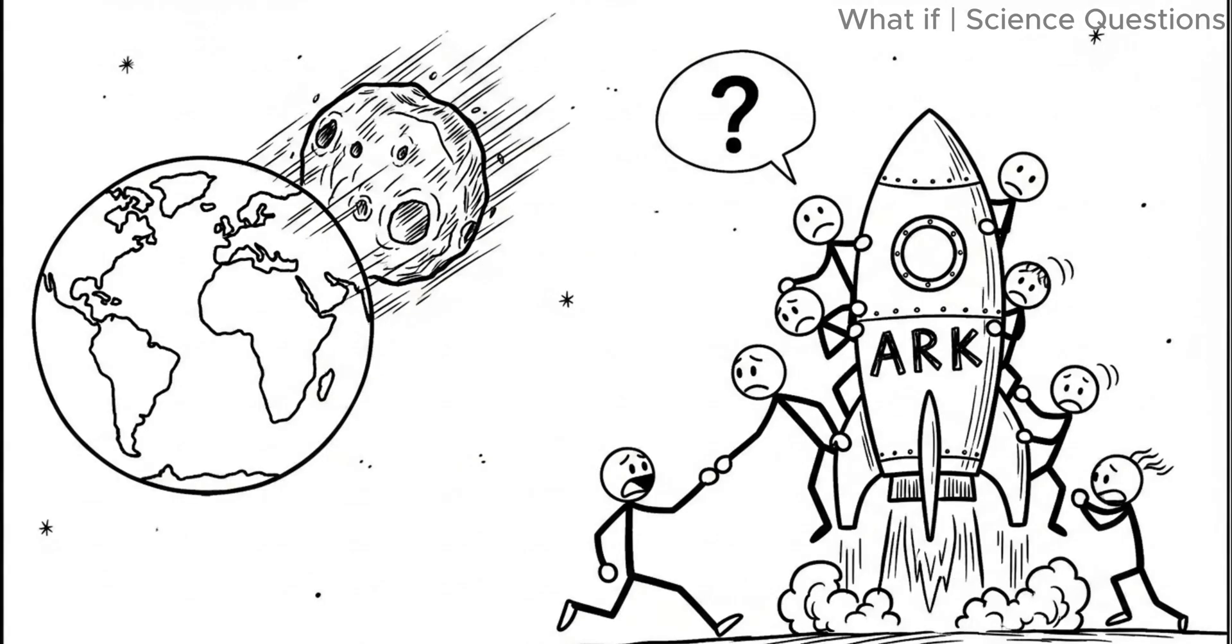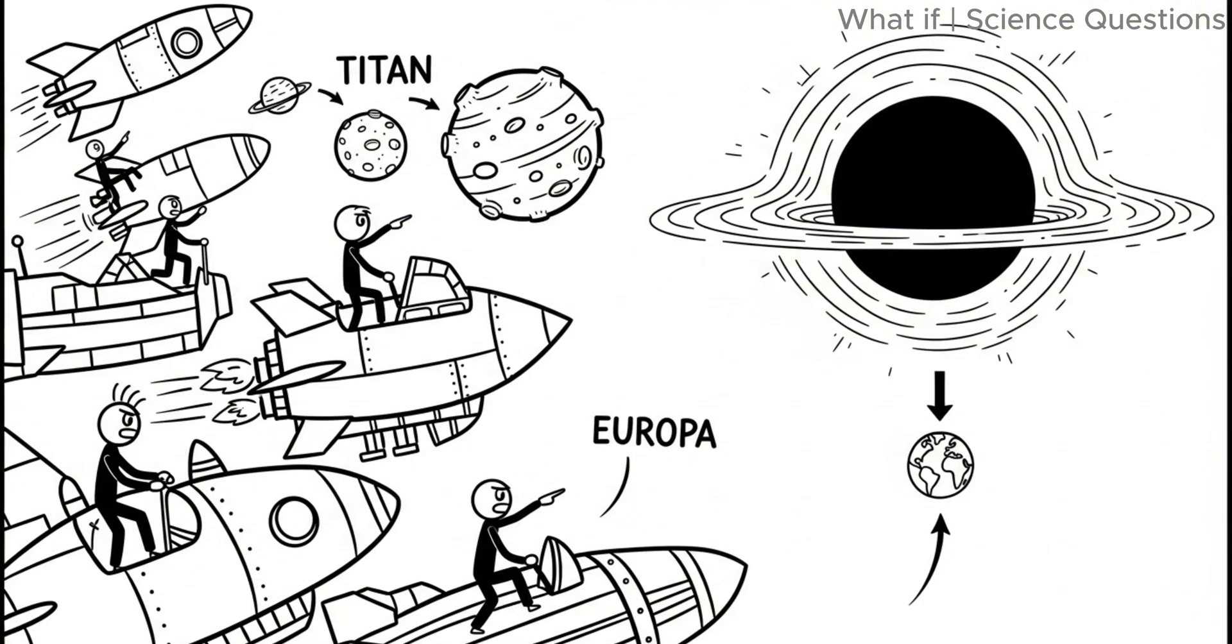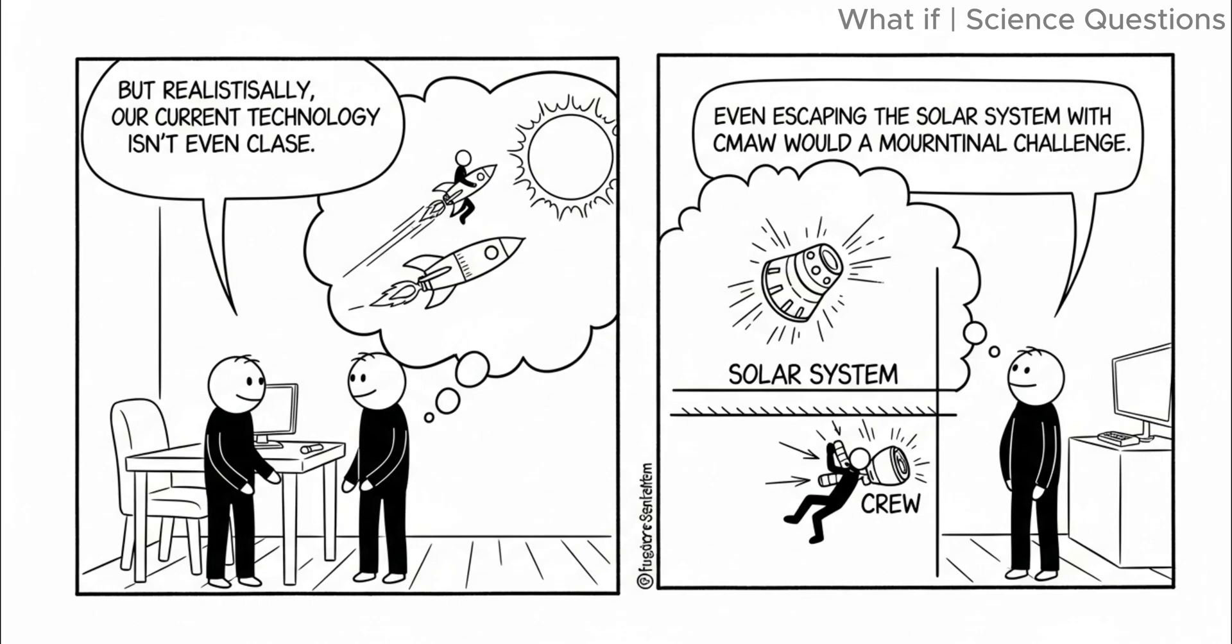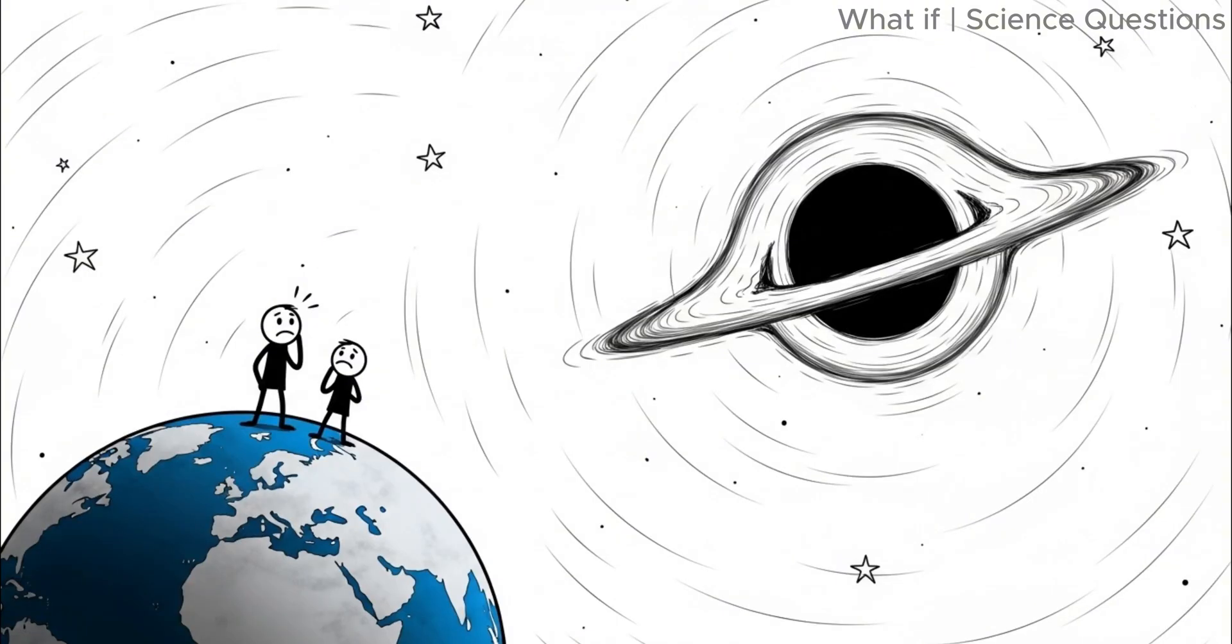But what if humanity had enough warning? Could we escape? If the black hole's approach were detected centuries in advance, perhaps we could build massive spacefaring ships, or even terraform distant moons like Titan or Europa, as emergency refuges. But realistically, our current technology isn't even close. Even escaping the solar system with a small crew would be a monumental challenge. For now, we are trapped on this tiny blue dot, hoping no rogue black hole crosses our path.